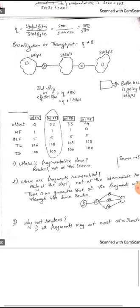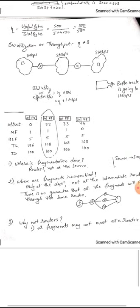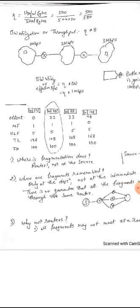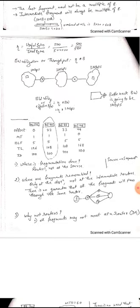A fragmentation example: offsets are 0, 22, 33, 44; MF is 1 for all except the last (MF=0); header length field is 5; total length values are 196, 108, 108, 168; IDs are all the same. Fragmentation is done at routers, not at the source — source does only segmentation. Reassembly is always done at the destination, not at intermediate routers, because there is no guarantee all fragments follow the same path.